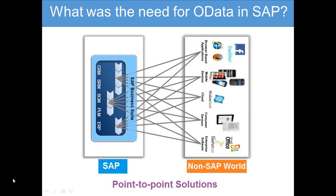That was a surprise for an SAP developer like me. In fact, Citrix, IBM, Microsoft, Progress Software, SAP, and WSO2 — these were the companies which collaborated together to standardize OData for the implementation of RESTful. Everyone came together, gave their input, and managed to develop OData, which is now universally used by everyone. Today, OData is managed by a company called the OASIS Organization.